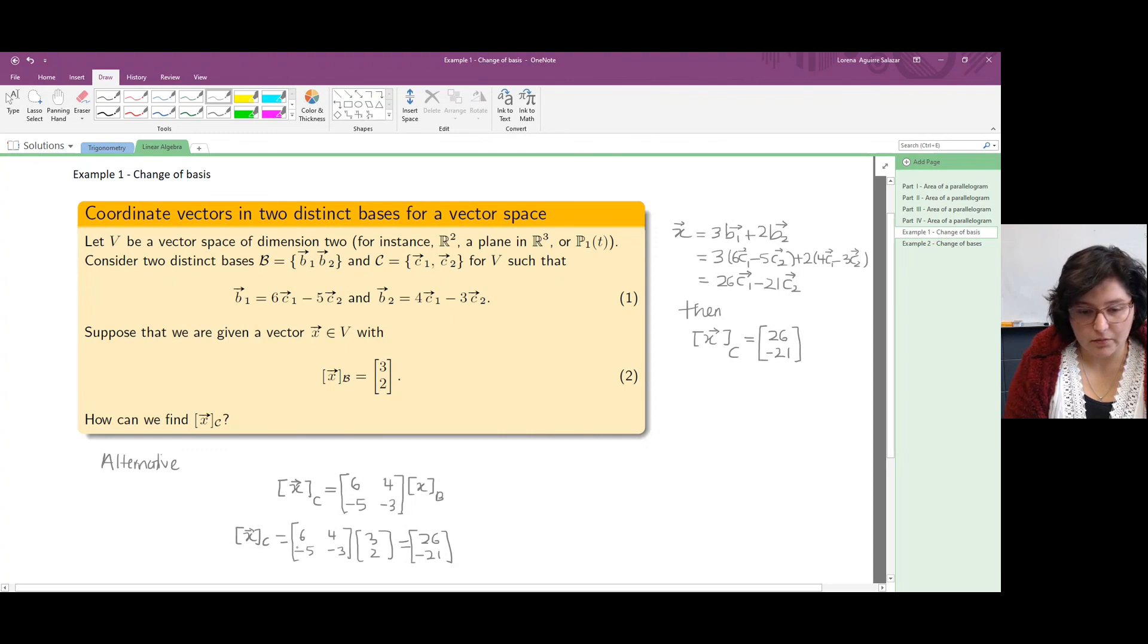The matrix we see here, the matrix that shows up in the process of changing bases, is called a change of coordinate matrix. This is a matrix we use to change coordinates. We're going from coordinates in the basis B to coordinates in the basis C.